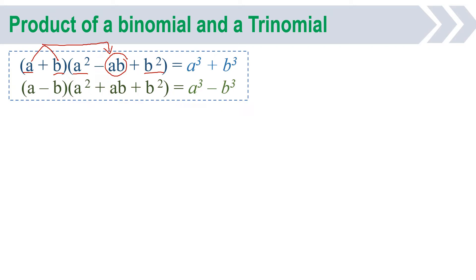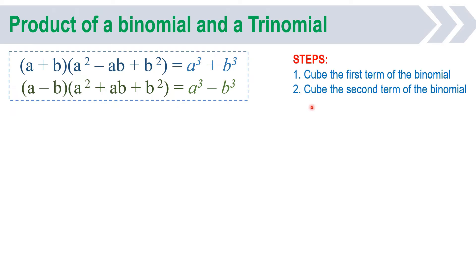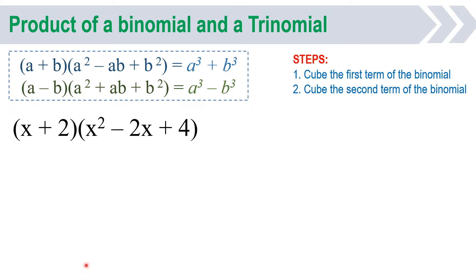Same with the second example. If the given is really a product of a binomial and a trinomial of special form, you just have to follow these steps — very easy. First, cube the first term of the binomial. Second, cube the second term of the binomial. But remember, make sure that the trinomial is really in the special form. Let's start with our example.